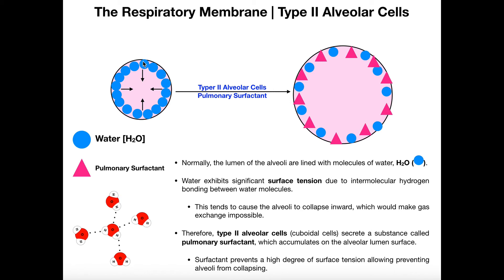Fortunately, when we're born — assuming we're not premature — we have these other cells called type 2 alveolar cells. And these type 2 alveolar cells make a very special secretion which is called pulmonary surfactant. Now, pulmonary surfactant is not a single molecule; it's actually a mixture of a lot of different molecules, many of which are lipid in nature.